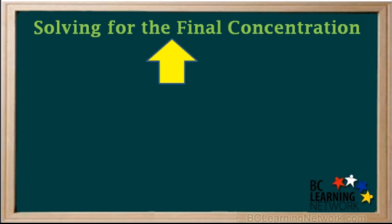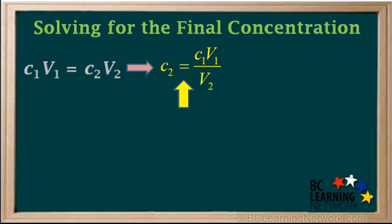The most common type of dilution calculation is determining the final concentration of a solution after it's been diluted. So students are often encouraged to remember the equation which solves for the final concentration. Solving this equation for final concentration C2 gives C2 equals C1V1 over V2.